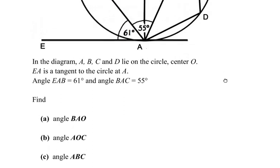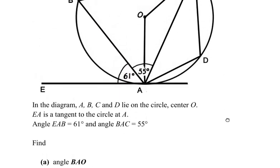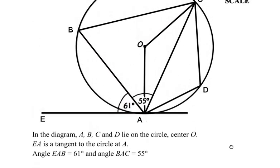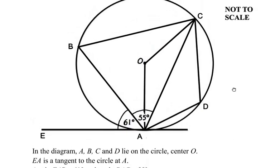Let us start solving them one by one, starting with angle BAO. So let us see where it is located — it is over here, that is angle BAO. To find out this angle we are going to make use of the radius-tangent theorem.